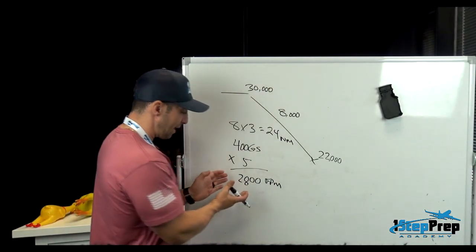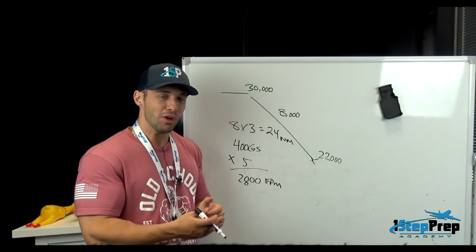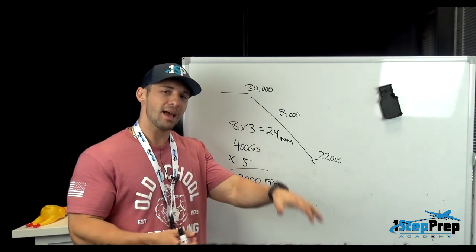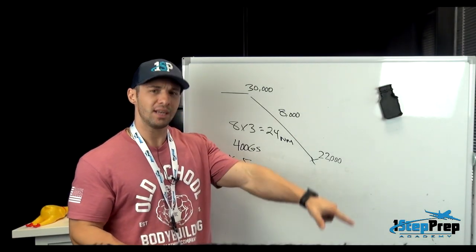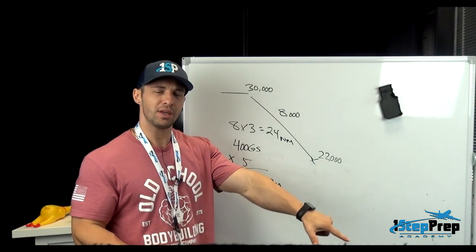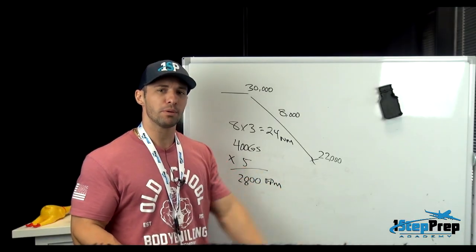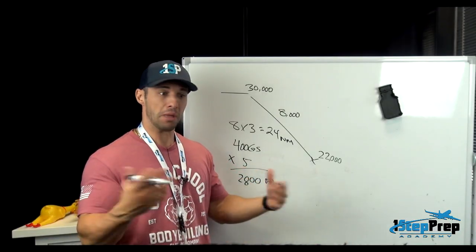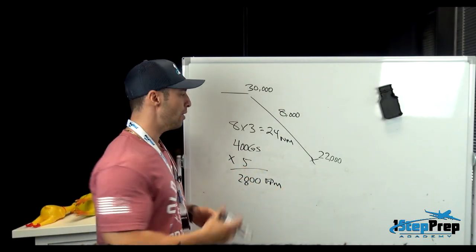How do I know that? Because, as I just said, at a minimum I need 2,000 feet per minute. So if you're coming down and you need 2,000 but you're actually descending at 2,700, 2,800, or 3,200 feet per minute, more than likely you've got it.